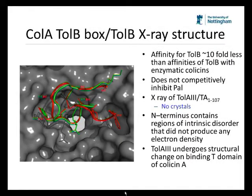So in 2010, we solved the crystal structure of the TolB box of colicin A, shown here in green, with TolB shown in grey. We were then able to compare that with the previously deduced crystal structure of the complex between the TolB box of colicin E9, shown in red, and TolB.